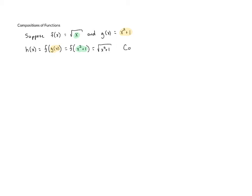Another way of thinking about this is that f as a function is the function that takes the square root. So if we're applying f to x squared plus one, we're taking the square root of x squared plus one. When we do something like this, we call this a composition of functions.